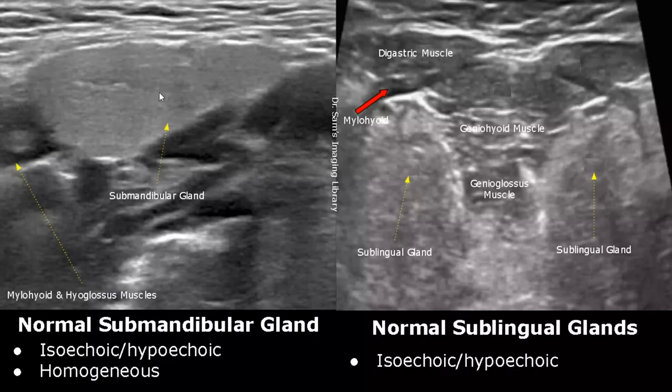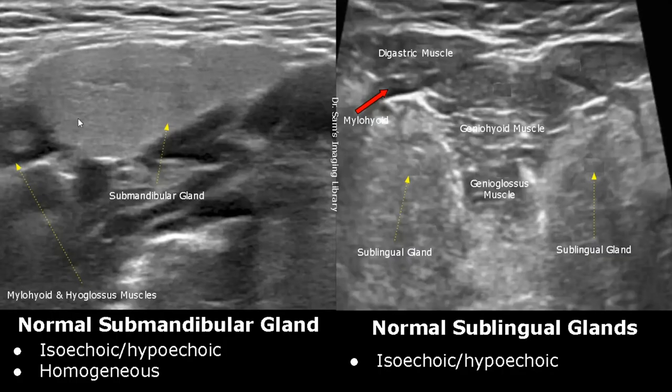This is the normal submandibular gland. It can be isoechoic or hypoechoic to adjacent structures, and it also has a homogeneous echo texture. Here, these hypoechoic structures are the mylohyoid and hyoglossus muscles.